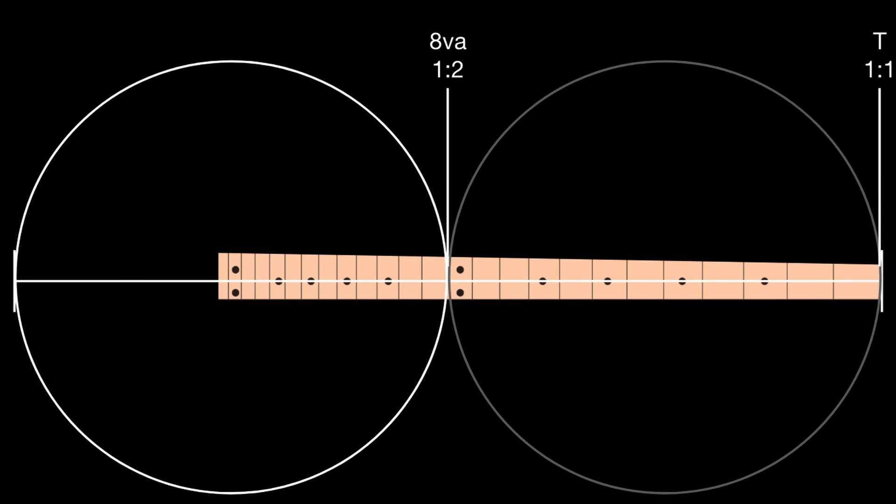I've superimposed a guitar fretboard on top of the string visual so you can see where all the semitones would be. Starting on the right side, putting your finger on any of those black lines shortens the string by that amount. The two-to-one ratio is highlighted — that's the octave. Half the length of string is an octave, which is also double the frequency. So one-to-one is the full length of string (the tonic), and the octave is half the length of string. What is the next obvious place to go?